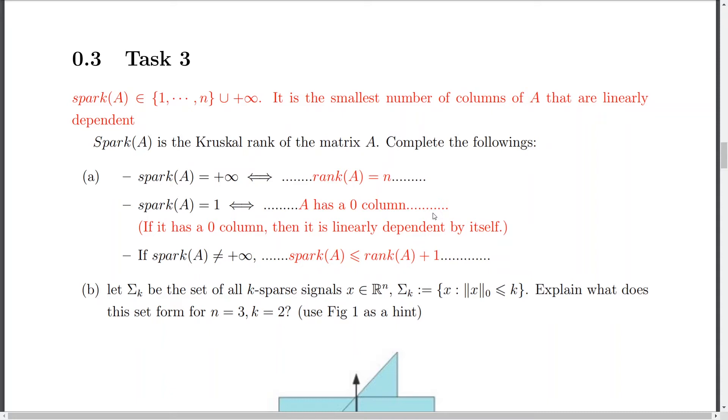And if my Spark equals one, then actually my matrix A has a zero column. So, I mean, it is dependent with itself, let's say. So, that's why it could equal one. There is no other situation for that. And if my Spark in general is not equal to the infinity or n plus one, this takes me to the situation where Spark A is actually smaller or equal to the rank plus one. So, here the matrix can never be full rank. So, here it cannot be an n. And, of course, if it's not full rank, then my Spark is not infinity. And the plus one.